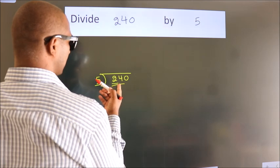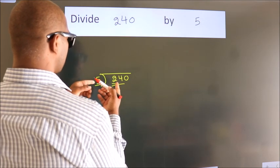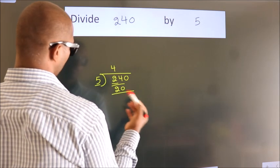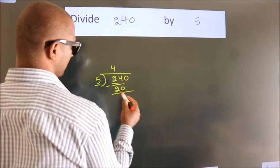A number close to 24 in the 5 table is 5 times 4 equals 20. Now we should subtract. We get 4.